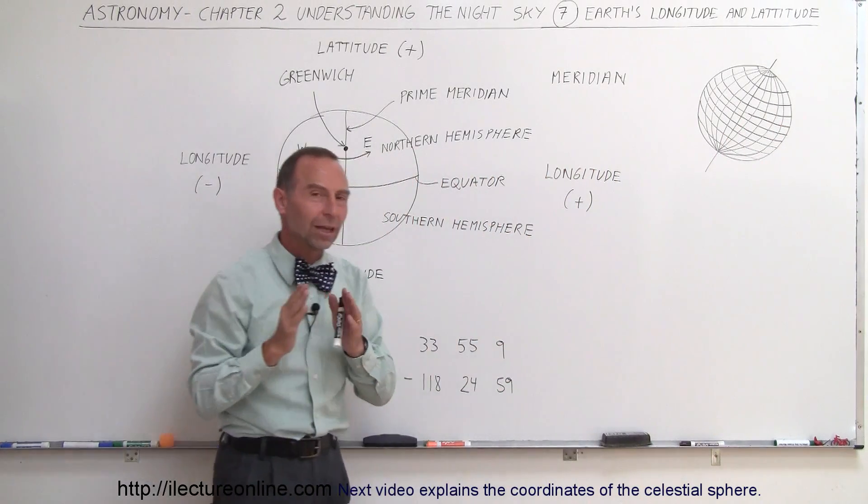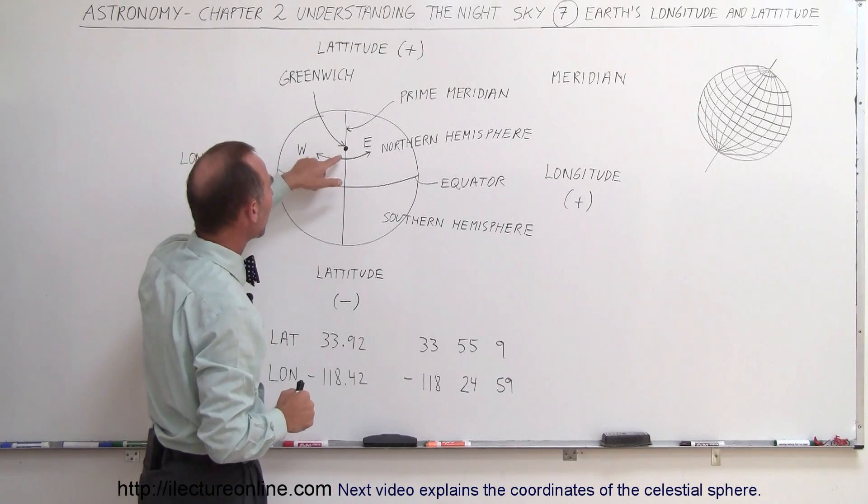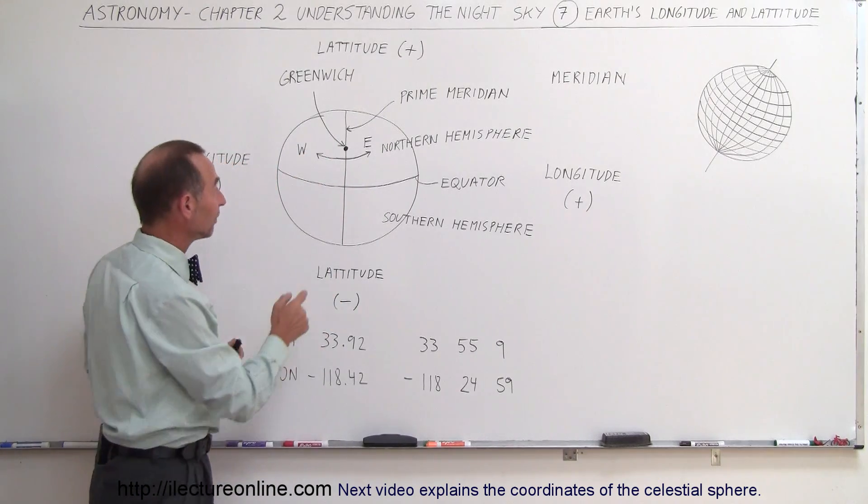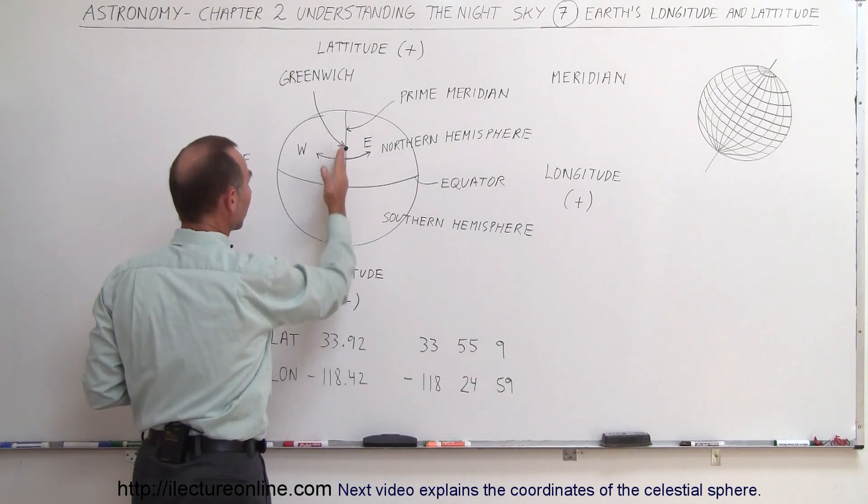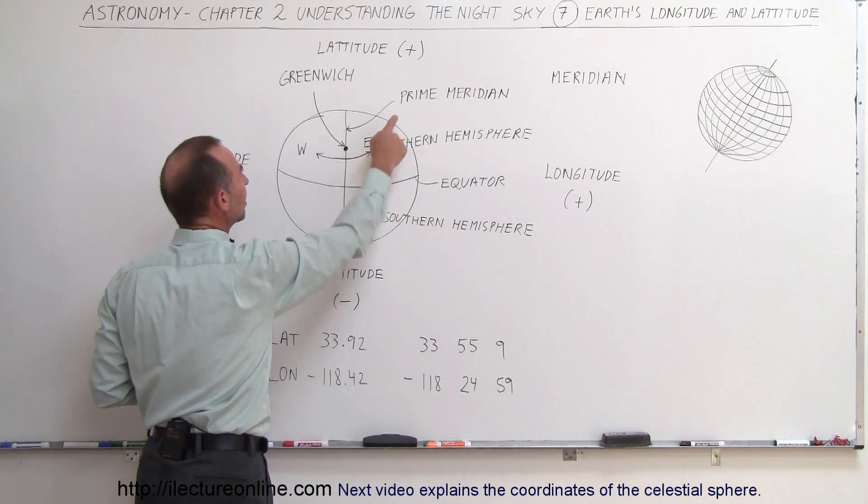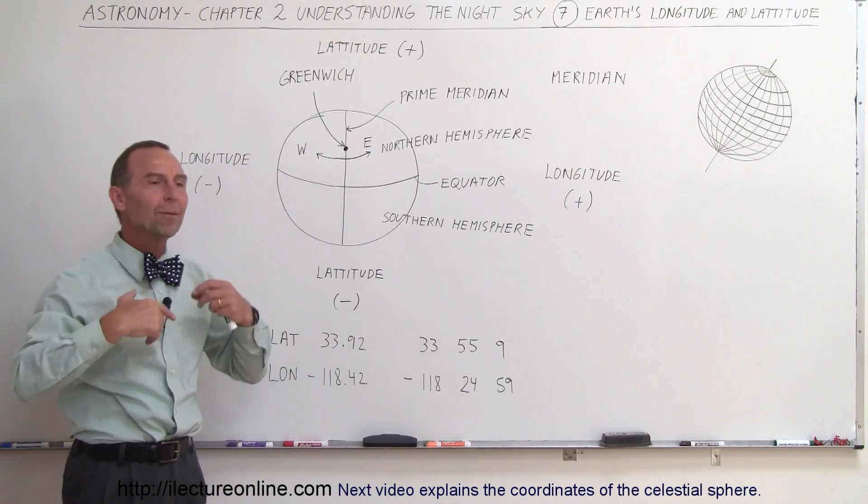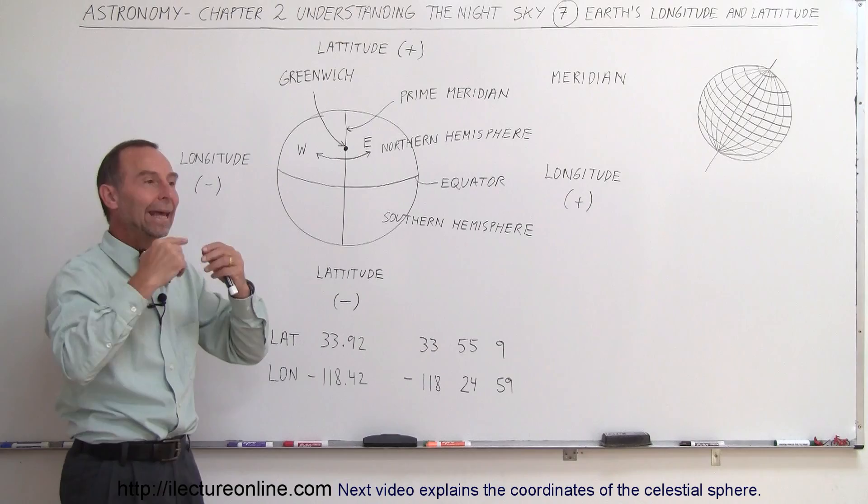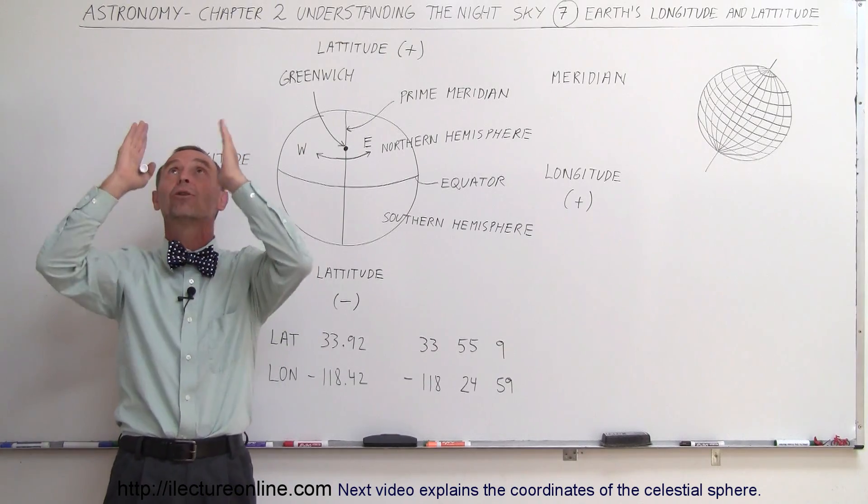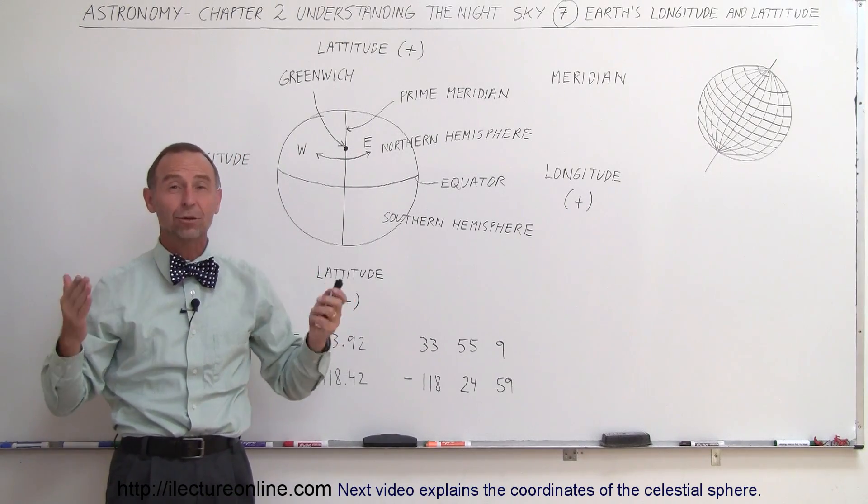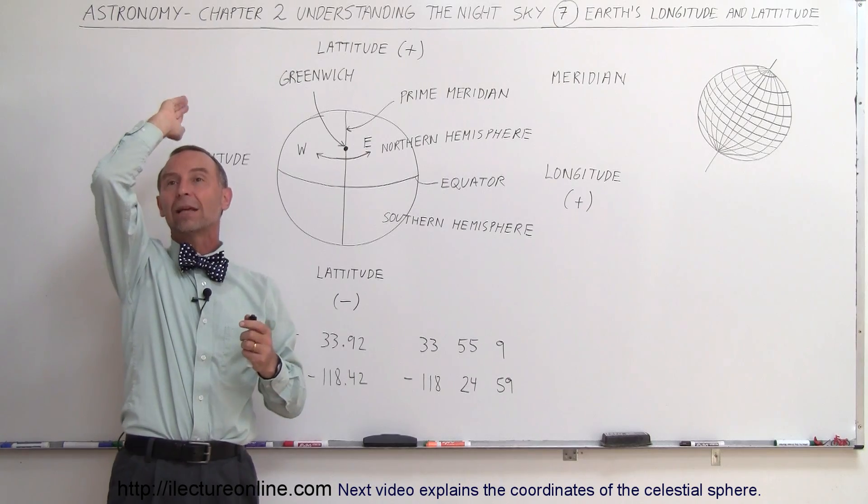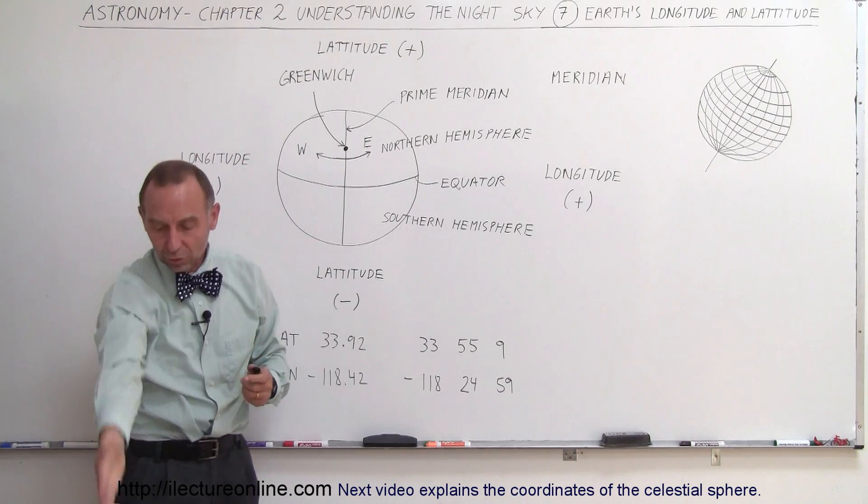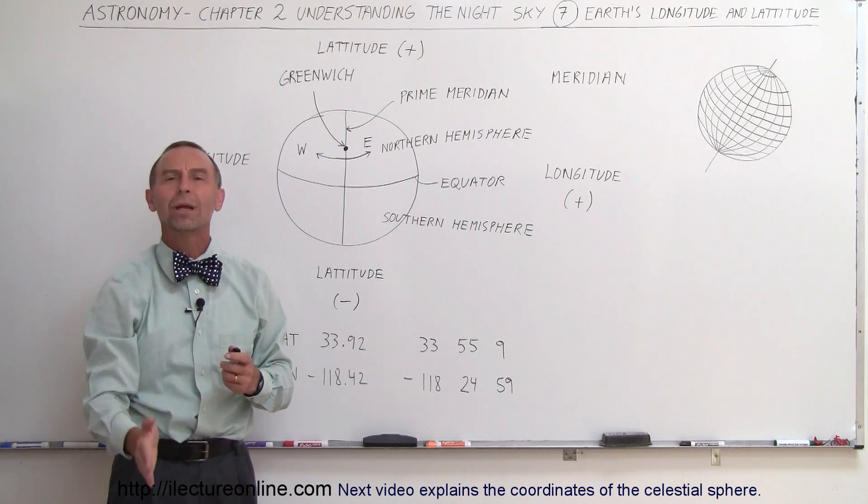That fixed point on the Earth that determines the longitude is a small town called Greenwich, which is near London in England. The line that runs right through that is known as the prime meridian. A meridian is an imaginary line that runs around the Earth through the poles and goes to the point directly above where you're observing. So if you're standing anywhere on the Earth and look straight up, the line that goes through that point directly above you and through the North Pole and South Pole is called a meridian.